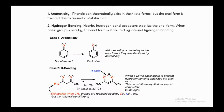Factors that affect tautomerism include aromaticity and hydrogen bonding. Phenols can theoretically exist in their keto form, but the enol form is favored due to aromatic stabilization. When phenol is in the enolic state it is aromatic and hence more stable, whereas the keto form of phenol is less stable or not observed at all because it is not aromatic.